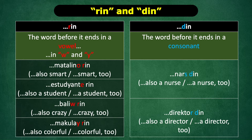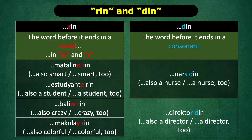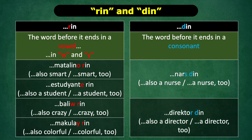On the other hand, you use Din if the word before it ends in a consonant, except for W and Y — like "Nars Din," also a nurse, or nurse too. "Director Din" — also a director, or director too. Now let's continue with more examples. This time, let's mix things up a bit.